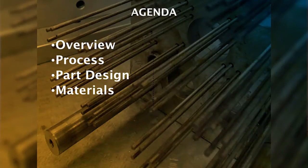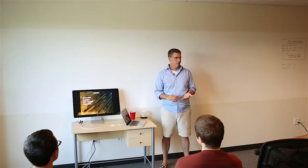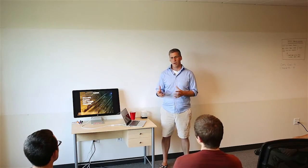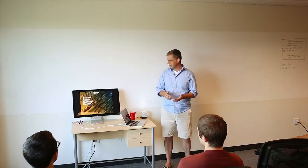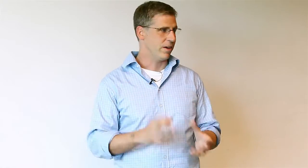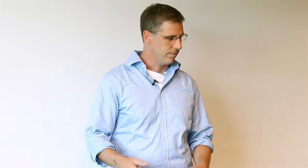What I figured would be a good place to start is really breaking each process down into four main parts. So first is just going through an overview of what is the process, what type of parts are typically made with it. Talking about the design rules for how would you design a part to use that process. Or maybe said another way, if you've got a part, what would be a good fit for that process. And then finally, the materials that you'd consider looking at.